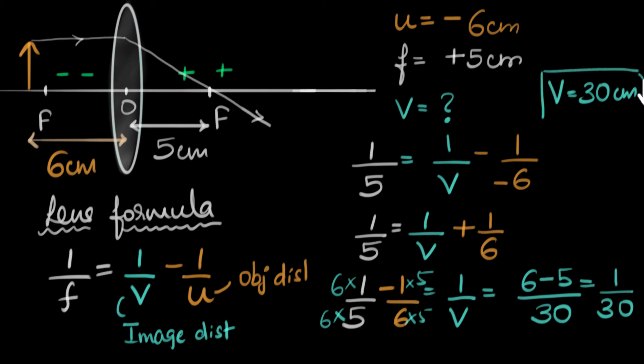And that's our answer. That's the image distance. So, this tells us our image is going to be 30 centimeters from the optic center.